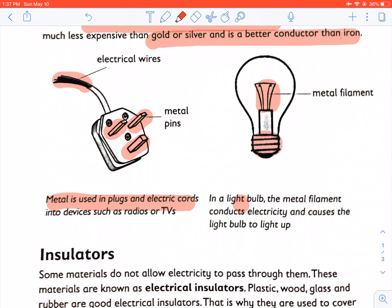Metal is used in plugs and electrical cords in devices such as radios and TVs. In a light bulb, the metal filament conducts electricity and causes the light bulb to light up.